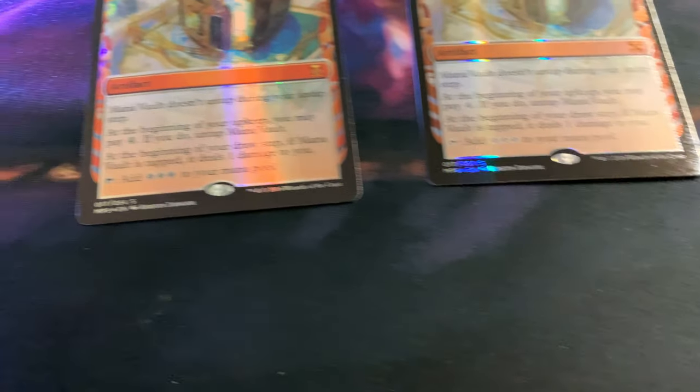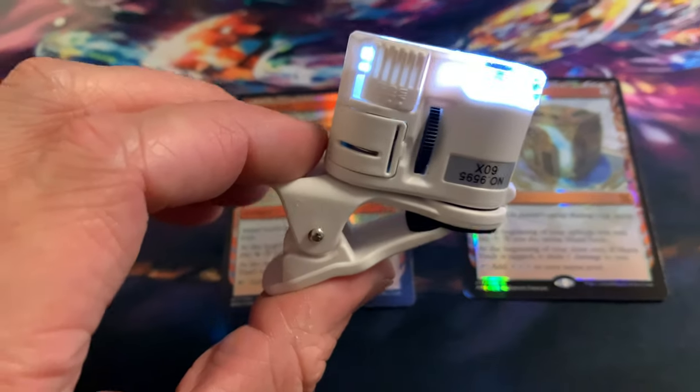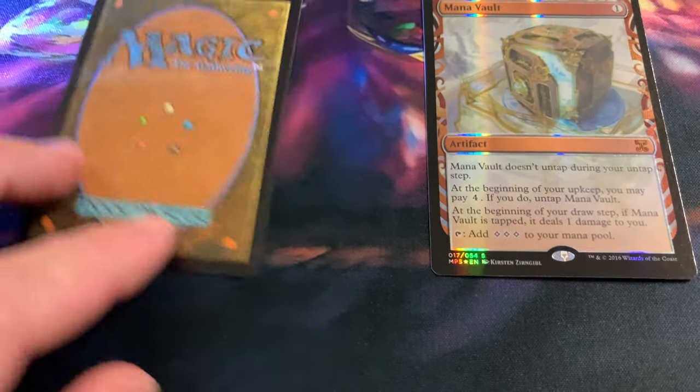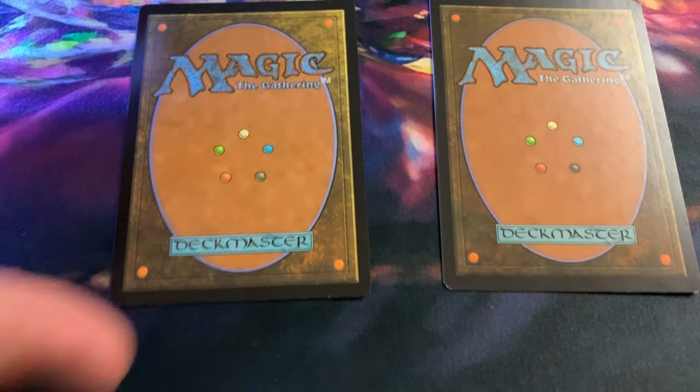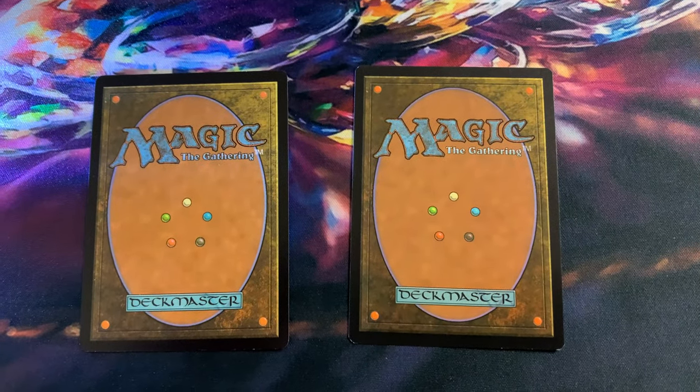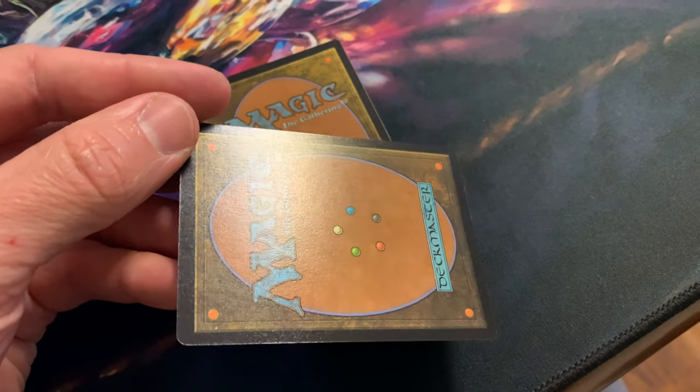I got a 60 times loupe over here to magnify it. The backs are very close again but this one, the fake, you can tell it has a very glossy reflection and it's a bit textured.